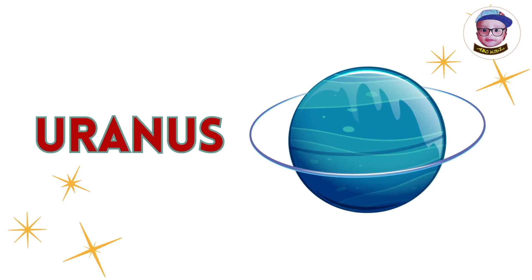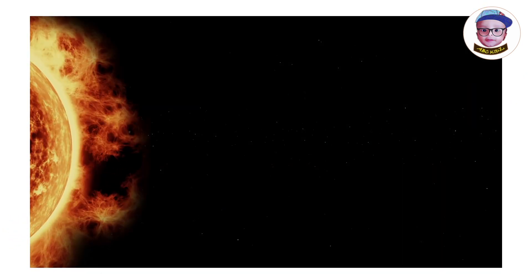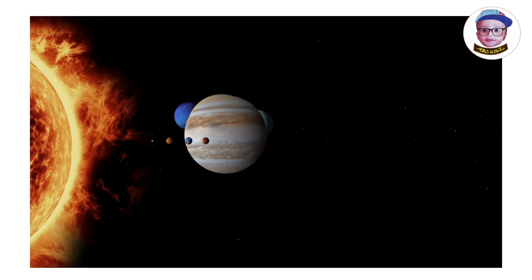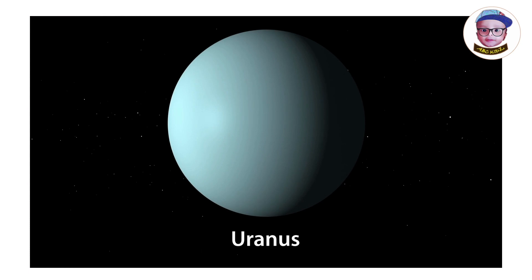Uranus. Uranus is the seventh planet. It is the coldest planet in the solar system.